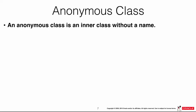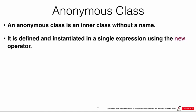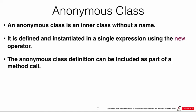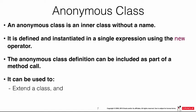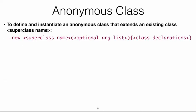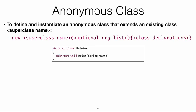Another important concept for Android development is anonymous classes. An anonymous class is an inner class that has no name — it's declared without a name and defined as an instance in a single expression using the new keyword. The anonymous class definition can be included as part of a method call. It can be used to extend a class or to implement an interface.